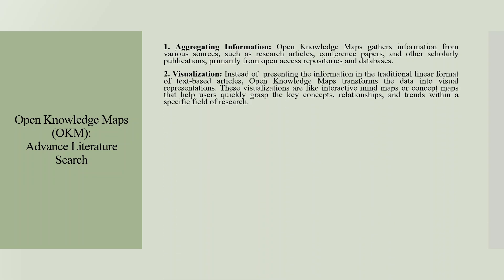Instead of presenting the information in the traditional linear format of text-based articles, open knowledge maps transform the data into visual representations. These visualizations are like interactive mind maps or concept maps that help users quickly grasp the key concepts, relationships and trends within a specific field of research.